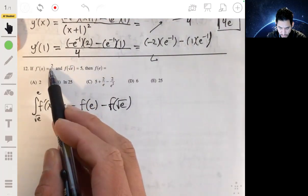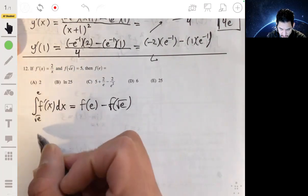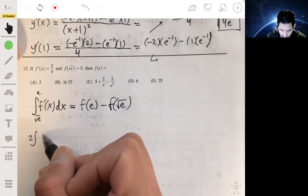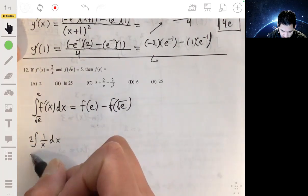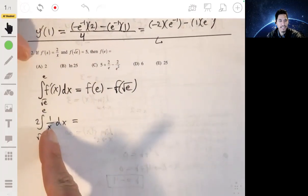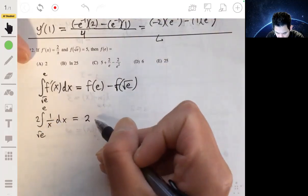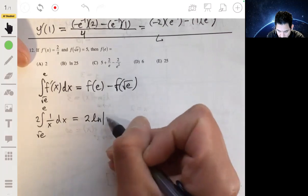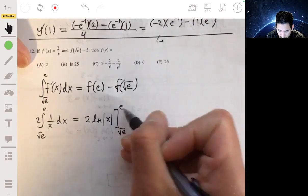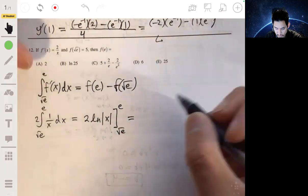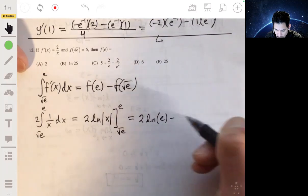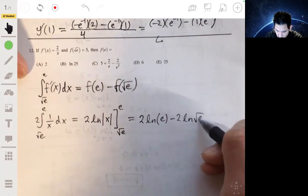So integrating this, so this is 2 over x, and this is going to be, so this is the same as 2 times 1 over x dx. And the integral, or anti-derivative of 1 over x is the natural log of the absolute value of x. So this will be 2 times the natural log of the absolute value of x. Then we're going to integrate from √e to e. So working it through, we get 2 times the natural log of e minus 2 times the natural log of √e.